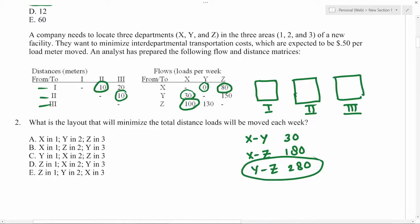The distance between Y and Z should be minimum. So suppose we assign X here, then because Z should be close to both X and Y, I'm going to put Z in the middle and then Y here. If you look at the options, the correct answer will be B.